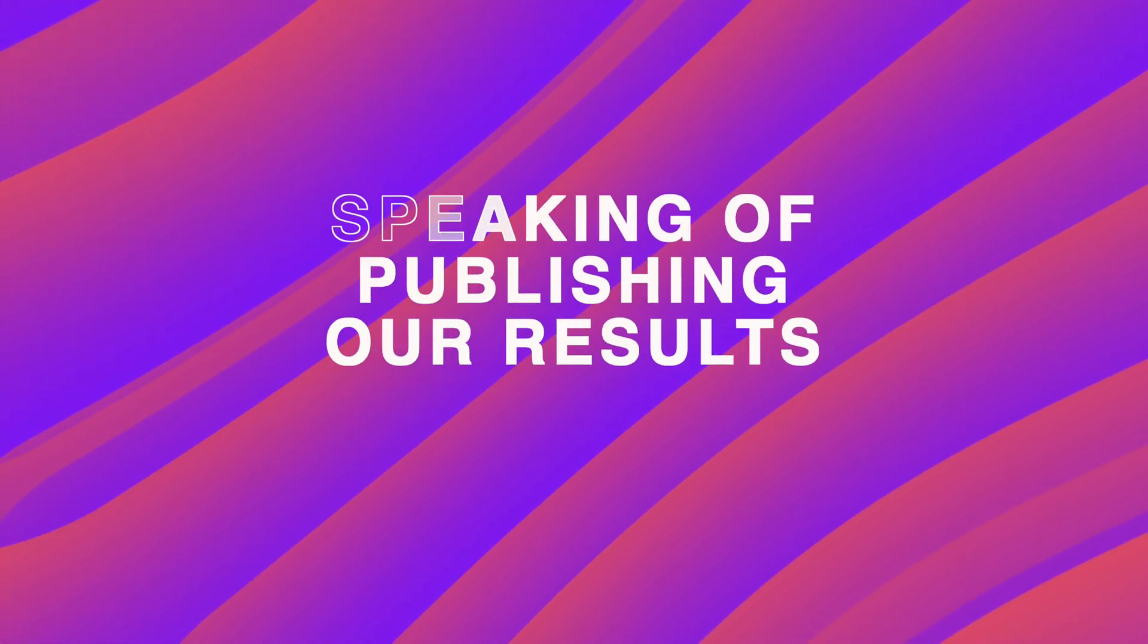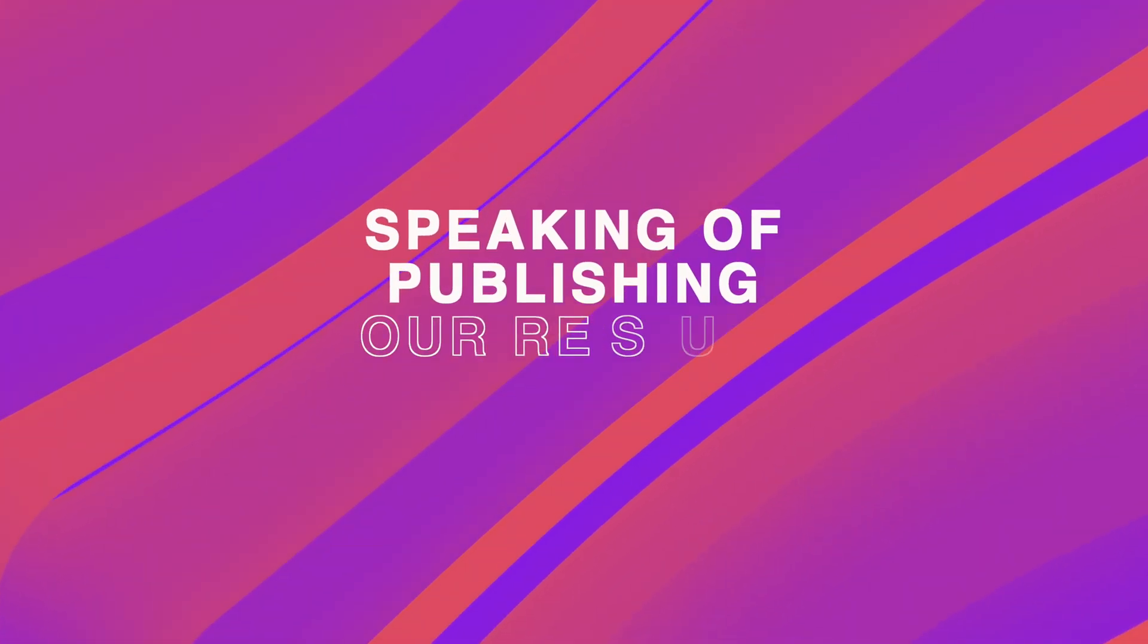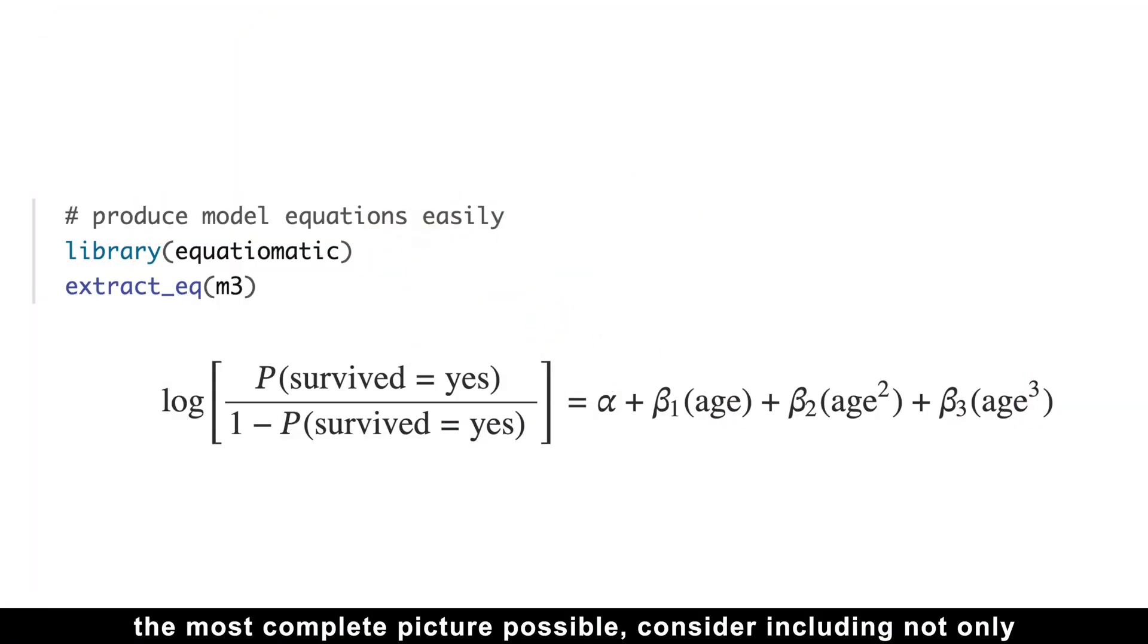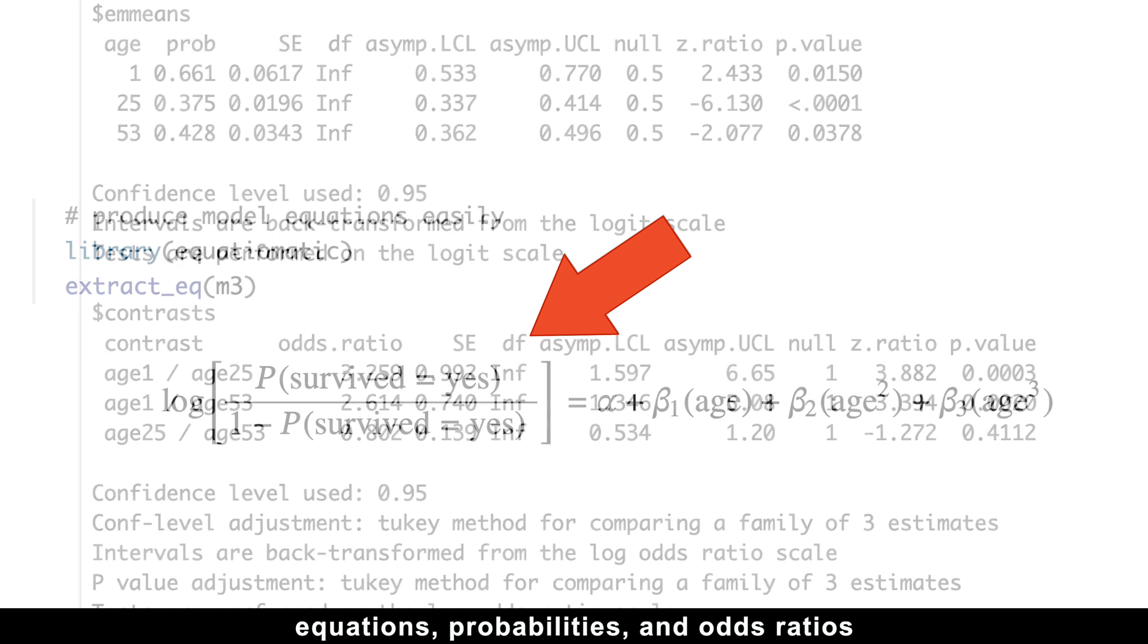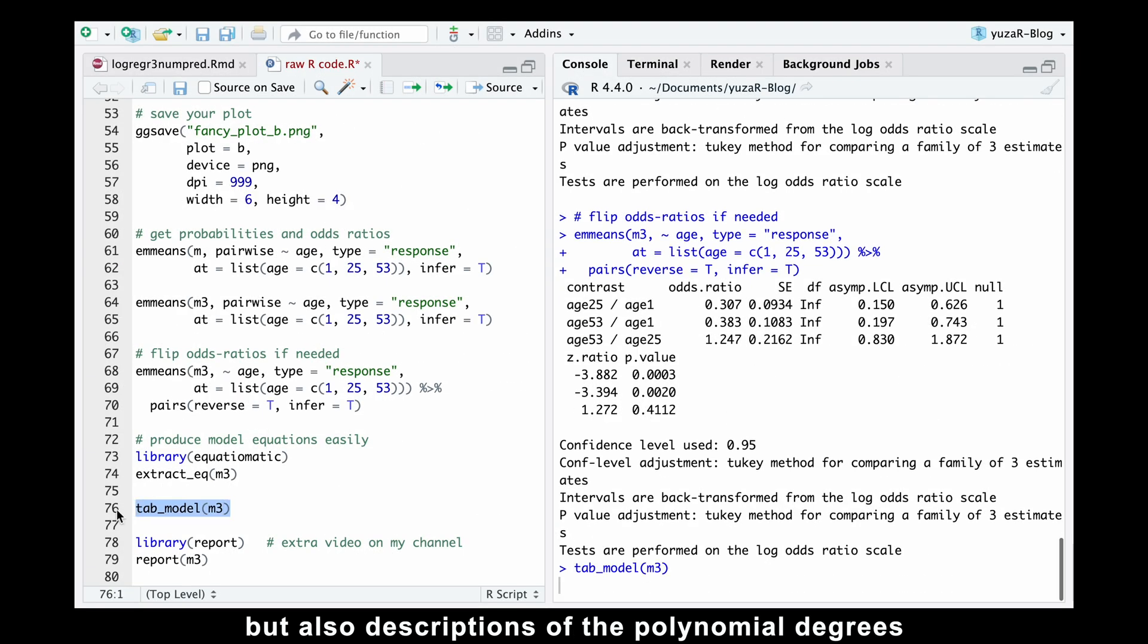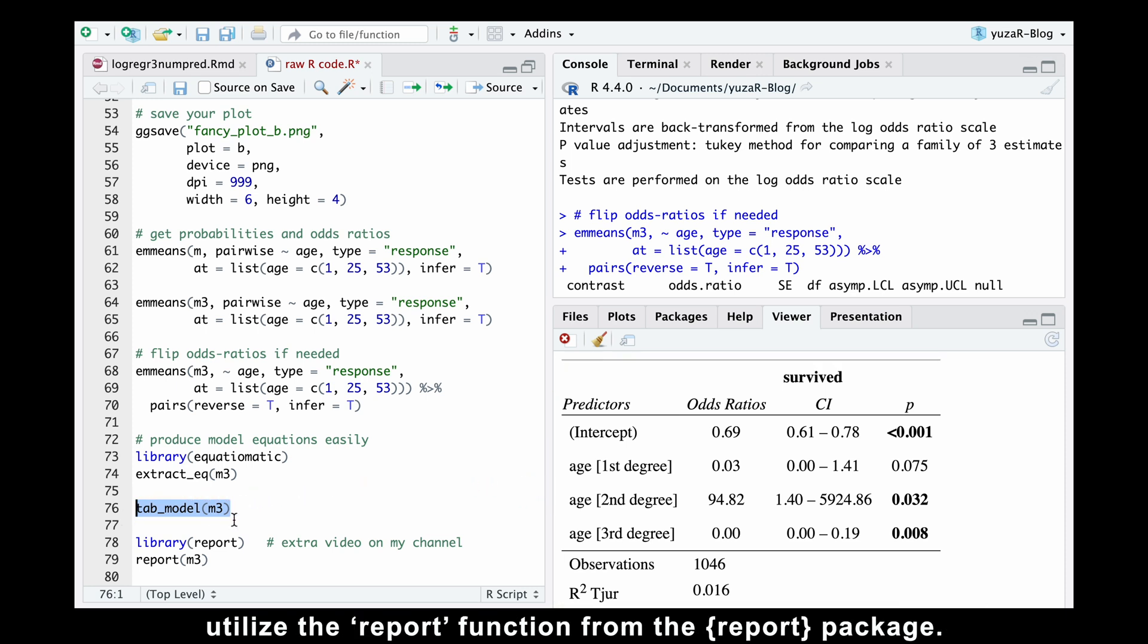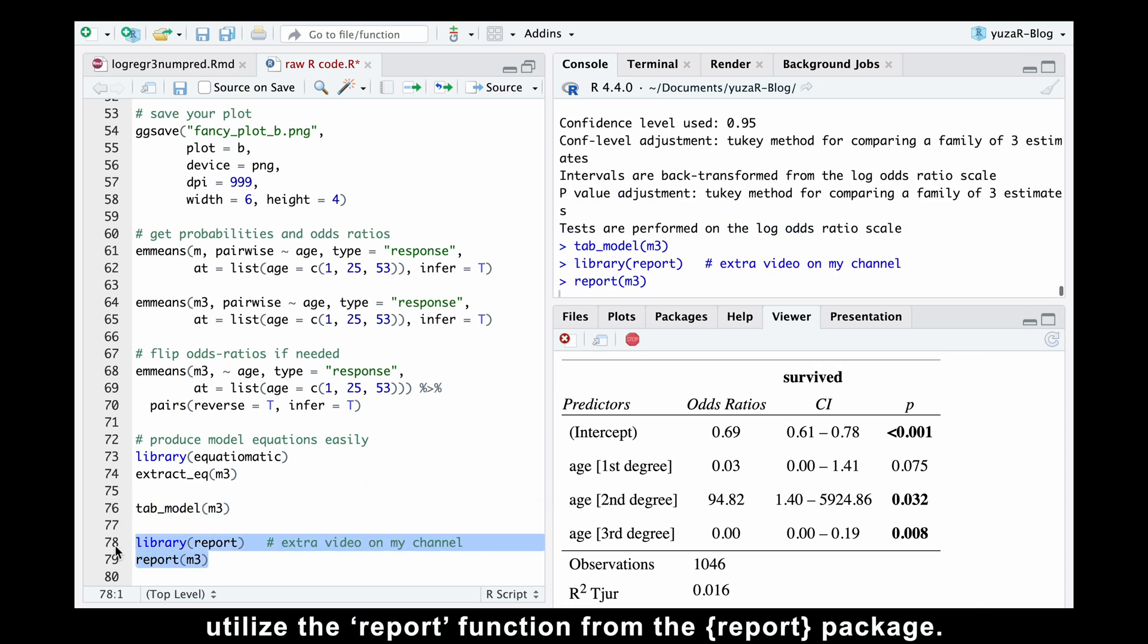And speaking of publishing our results, in order to produce the most complete picture possible, consider including not only equations, probabilities, and odds ratios, but also descriptions of the polynomial degrees generated using the anova function. To achieve this, utilize the report function from the report package.